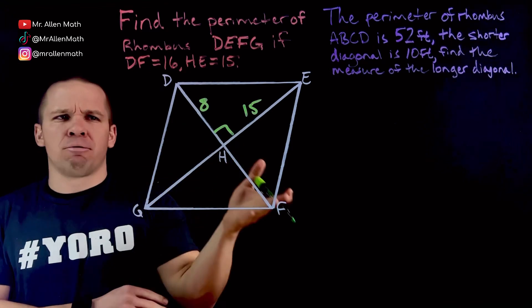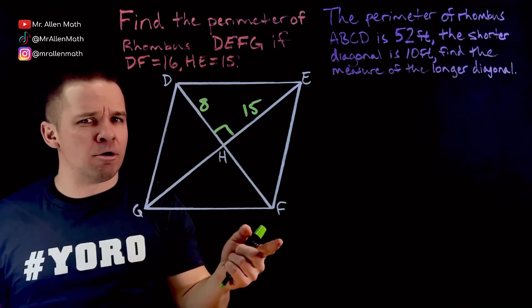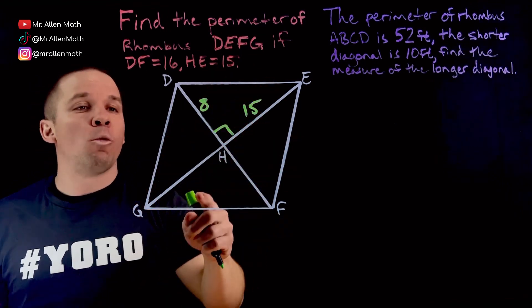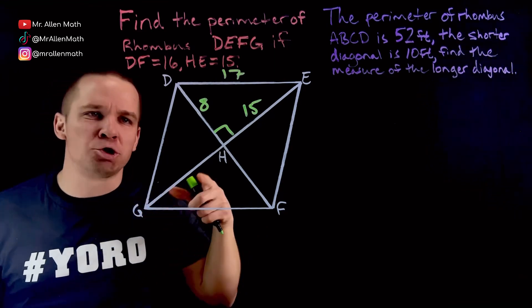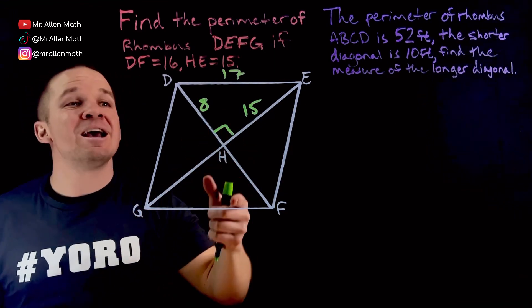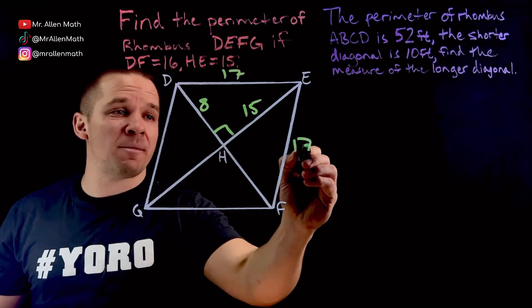If I want the perimeter of a rhombus, I'm gonna need all of its sides. Now all the sides are congruent. So if I find one side, I get all the sides. Well this is an 8, 15, 17 Pythagorean triple, right? 8 squared plus 15 squared equals 17 squared. So if that guy is 17, all of them are 17.